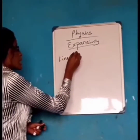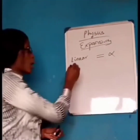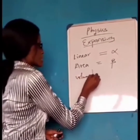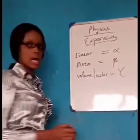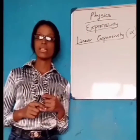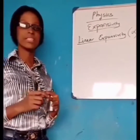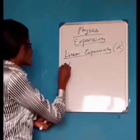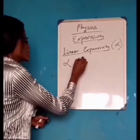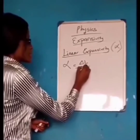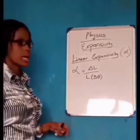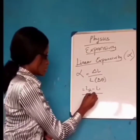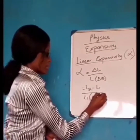Linear expansivity can be denoted with the sign alpha, while area expansivity can be denoted with the sign eta, and volume or cubic expansivity is denoted with the sign gamma. We define linear expansivity as an increase in length per unit length per degree rise in temperature, or per Kelvin rise in temperature. Mathematically, linear expansivity alpha equals increase in length per unit length per degree rise in temperature, which is L2 minus L1, all over L1 bracket theta 2 minus theta 1.